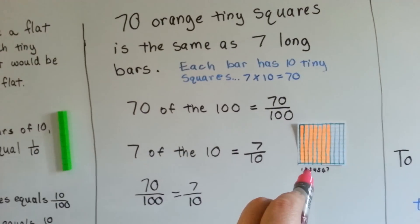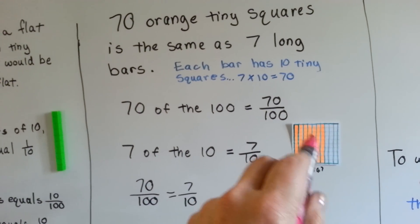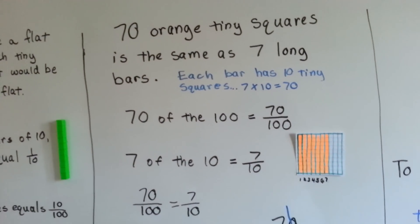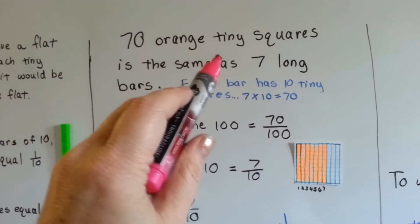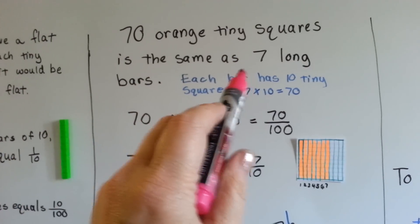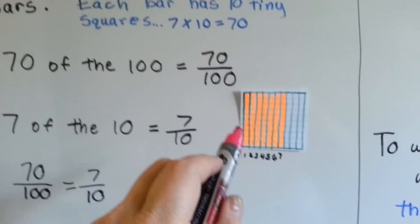So look at this one here. There's seventy squares filled in out of the hundred. Seventy orange tiny squares is the same as seven long bars.